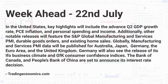In the United States, key highlights will include the advanced second quarter GDP growth rate, PCE inflation, and personal spending and income. Other notable releases will feature the S&P Global manufacturing and services PMI, durable goods orders, and existing home sales. Globally, manufacturing and services PMI data will be published for Australia, Japan, Germany, the euro area, and the United Kingdom. Germany will also see the release of its IFO business climate and GFK consumer confidence indices. The Bank of Canada and People's Bank of China are set to announce their interest rate decisions.